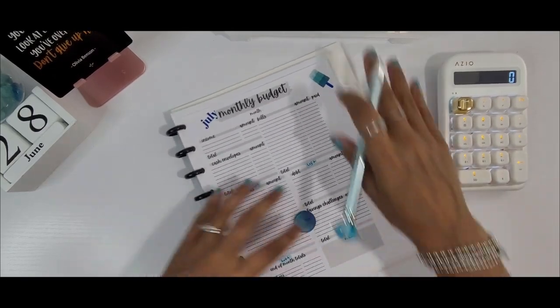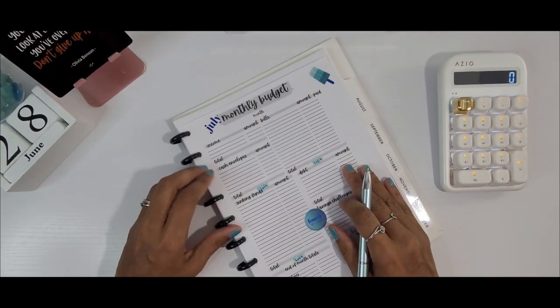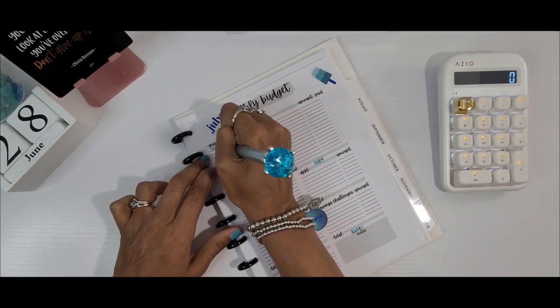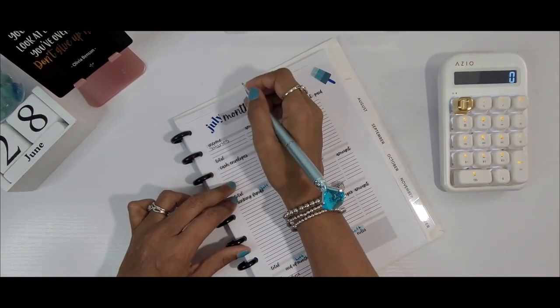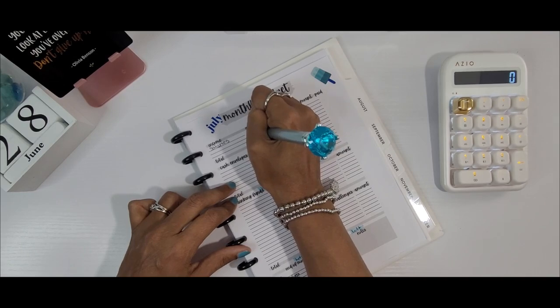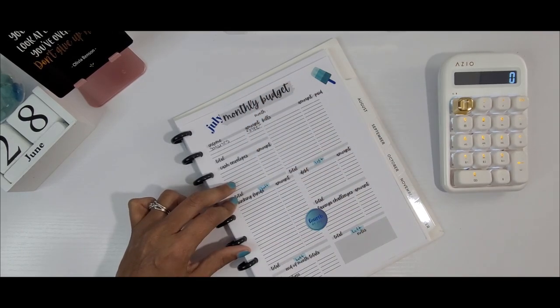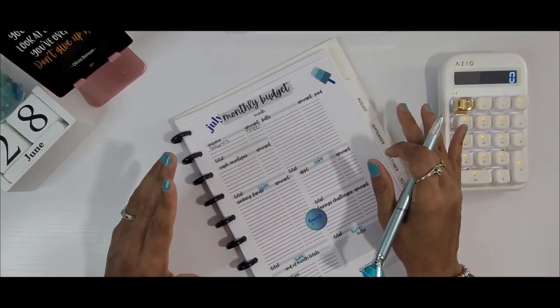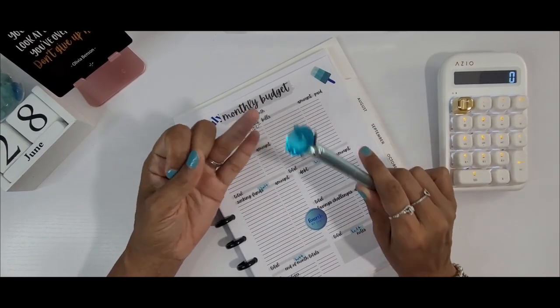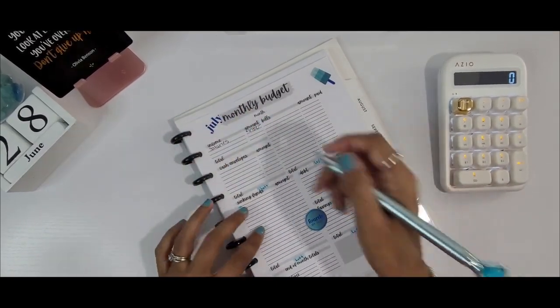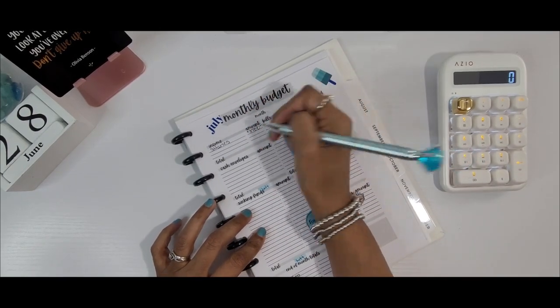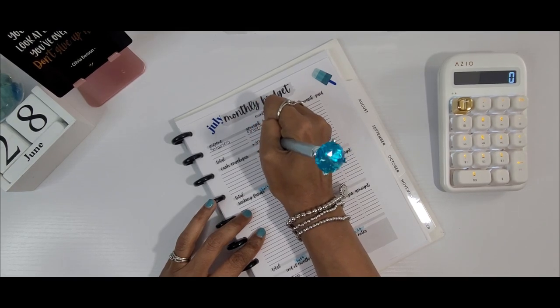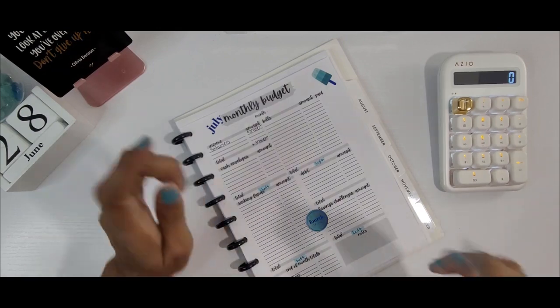So with that said, let's go ahead and get into these numbers. The first thing I am going to write down is the income we are working on for the month, which is going to be salaries. We are working with $3,780 for the month of July. Now this does not include any of my side hustle incomes, whether that be YouTube or my shop, so just as an FYI.